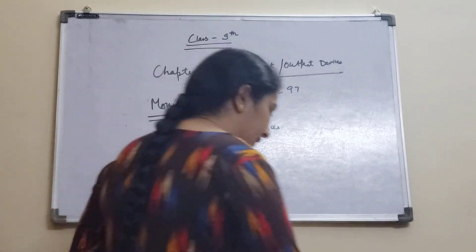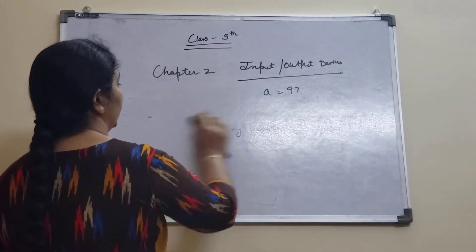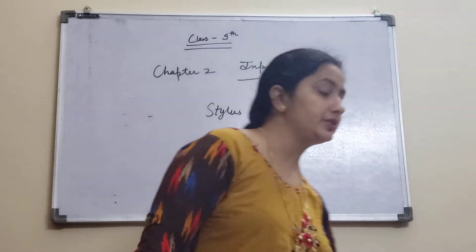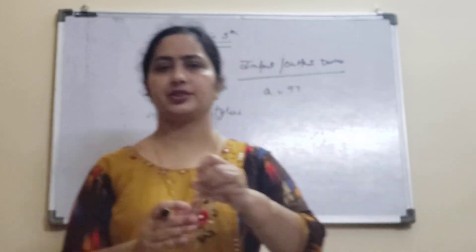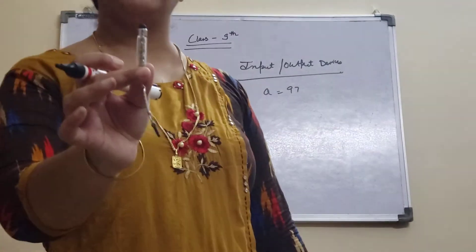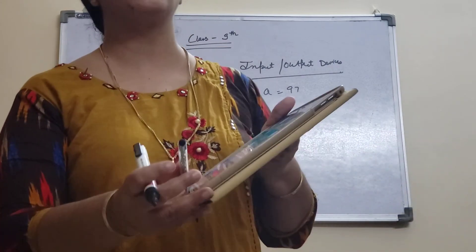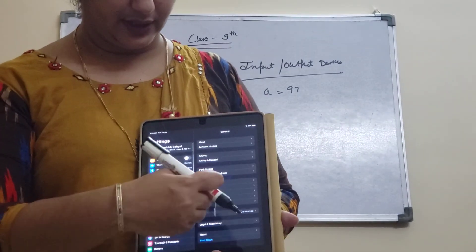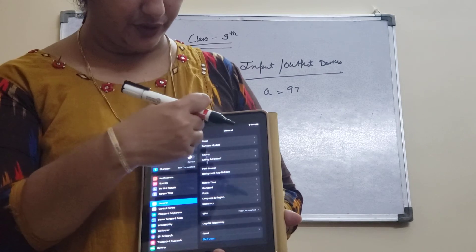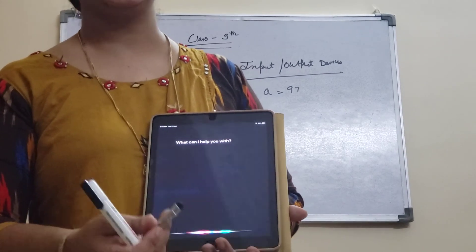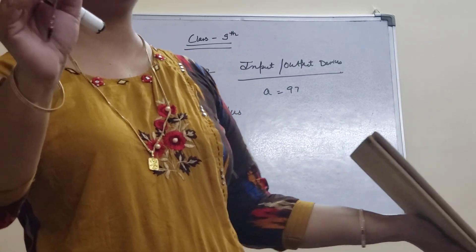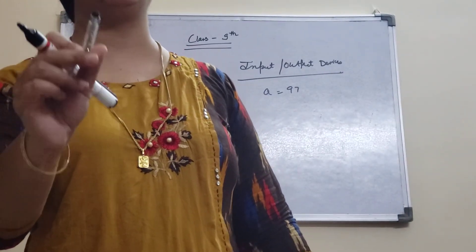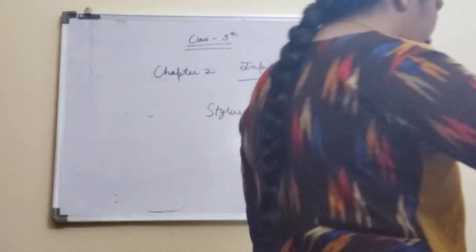The next device is the stylus. Suppose you have a touch screen and you don't want to use your fingers to point — you can simply use this device to point on any object available on the touch screen. So this is your stylus.